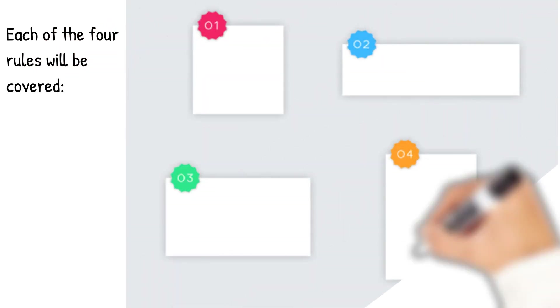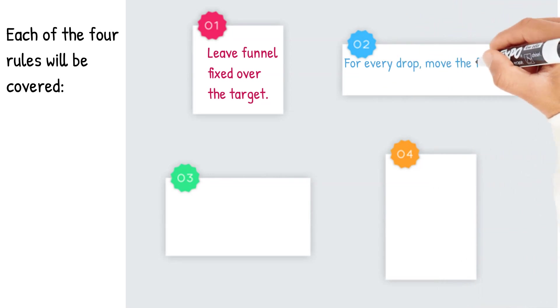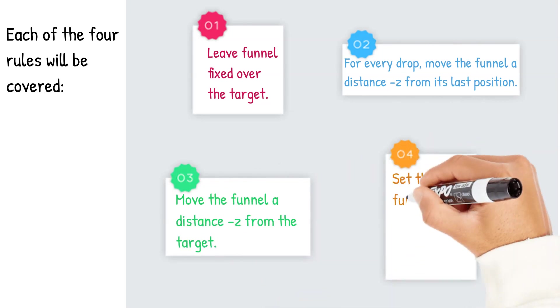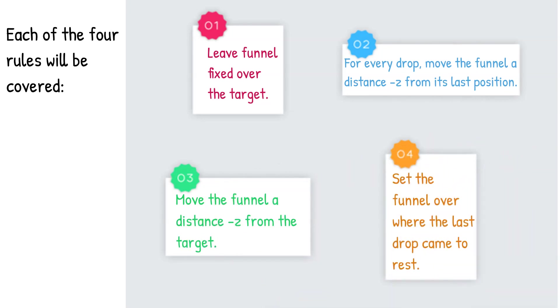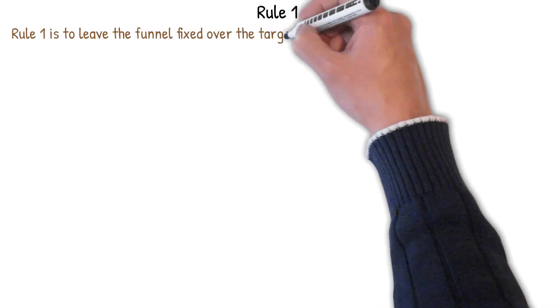The first rule is one for a process that is in statistical control. You leave the funnel fixed over the target. You don't make adjustments. Rule two, for every drop you're going to move the funnel a distance minus z from its last position. Rule three, you're going to move the funnel a distance minus z from the target. And rule four, you're just going to set the funnel over wherever the marble ended up.